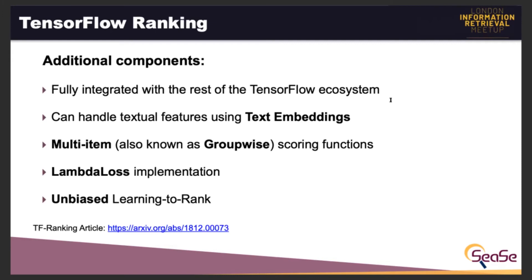Some algorithms don't directly optimize ranking metrics. In this case, LambdaLoss is a framework that addresses the ranking metric optimization problem using a principled probabilistic approach. There are also a lot of possible biases in a learning to rank scenario. For example, a user is less likely to examine or click items at the lowest position of the result list — ignoring this type of bias, known as position bias, when training a model may lead to less generalization capacity and inaccurate quality measurement. This library can handle such biases by computing inverse propensity weights for each position in the rank list.